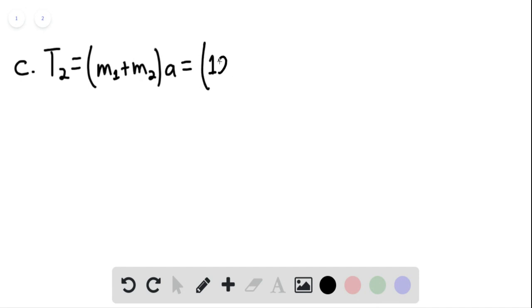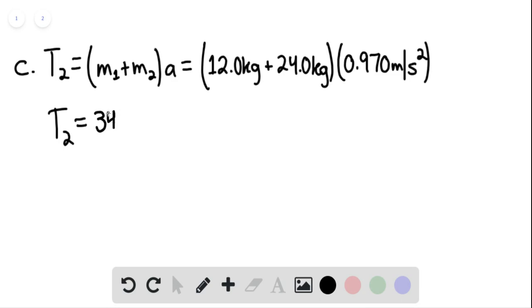And so this would be 12.0 kilograms plus 24.0 kilograms multiplied by 0.970 meters per second squared. And we find that T sub 2 is going to be equaling 34.9 newtons. This would be our answer for part C. That is the end of the solution. Thank you for watching.